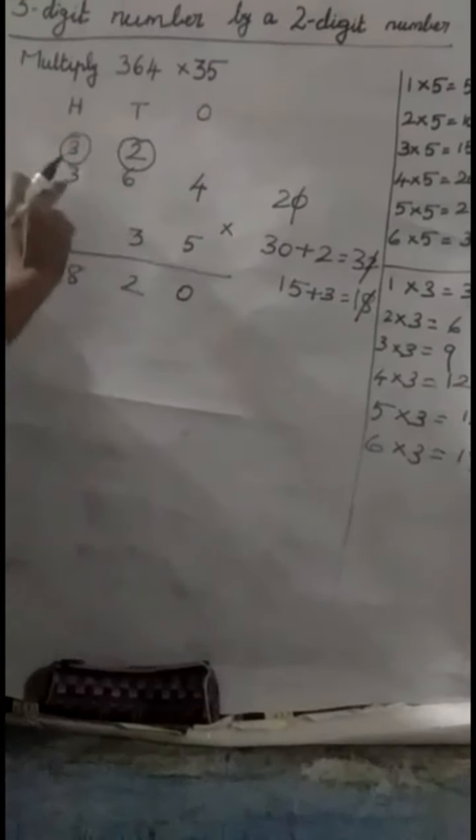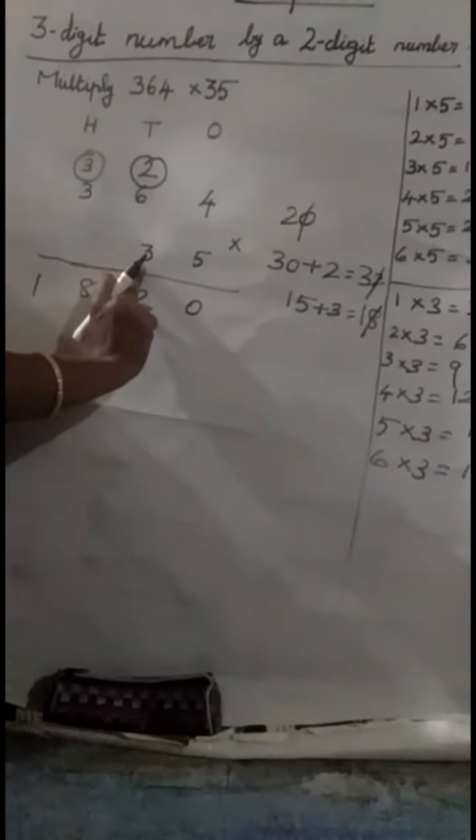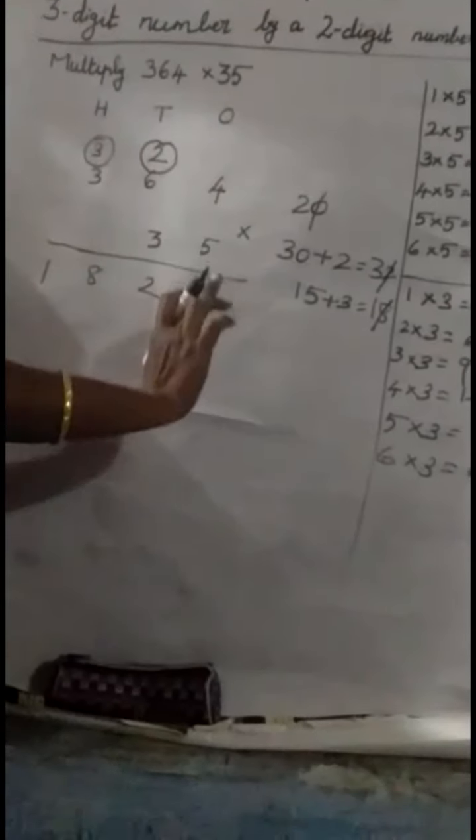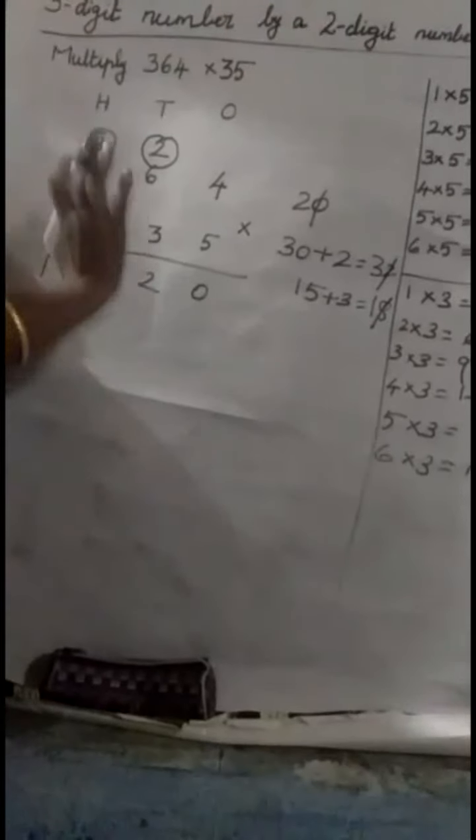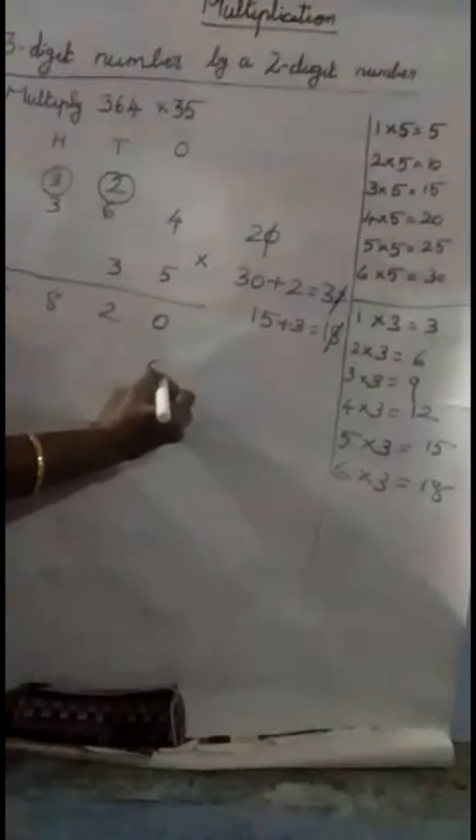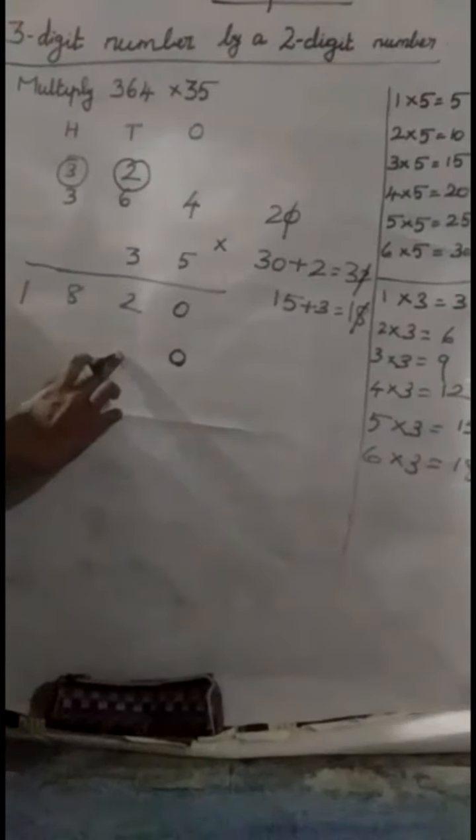Now, we are going to see the second number that is 10s multiplier. Now, 364 should multiply by 3. Since 3 is in the 10s place, we should start the answer from the 10s place. So, 1s place will be 0. Now, we have to start to write the answer from the 10s place.